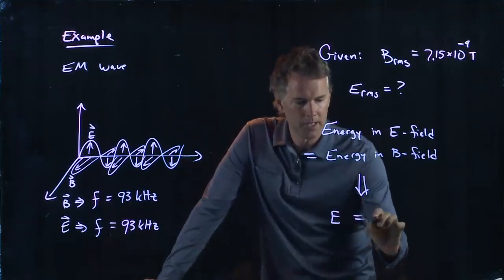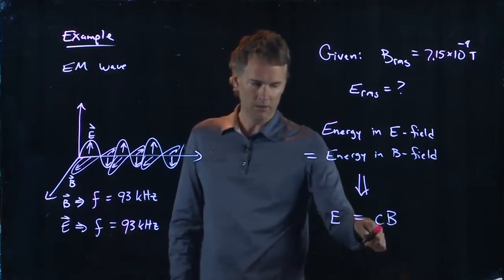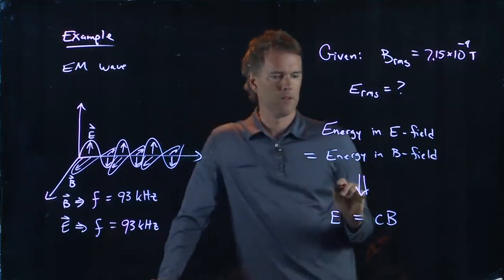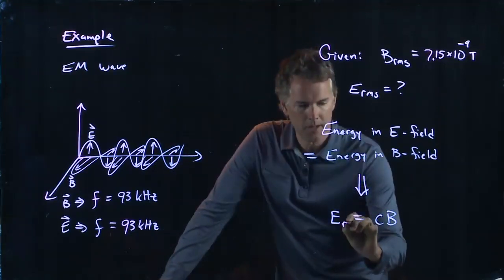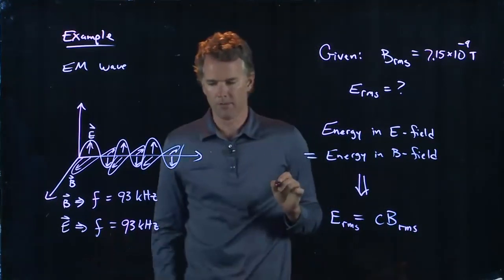So what is the electric field? It's equal to C, the speed of light, times the B field. So E RMS is just equal to C times B RMS.